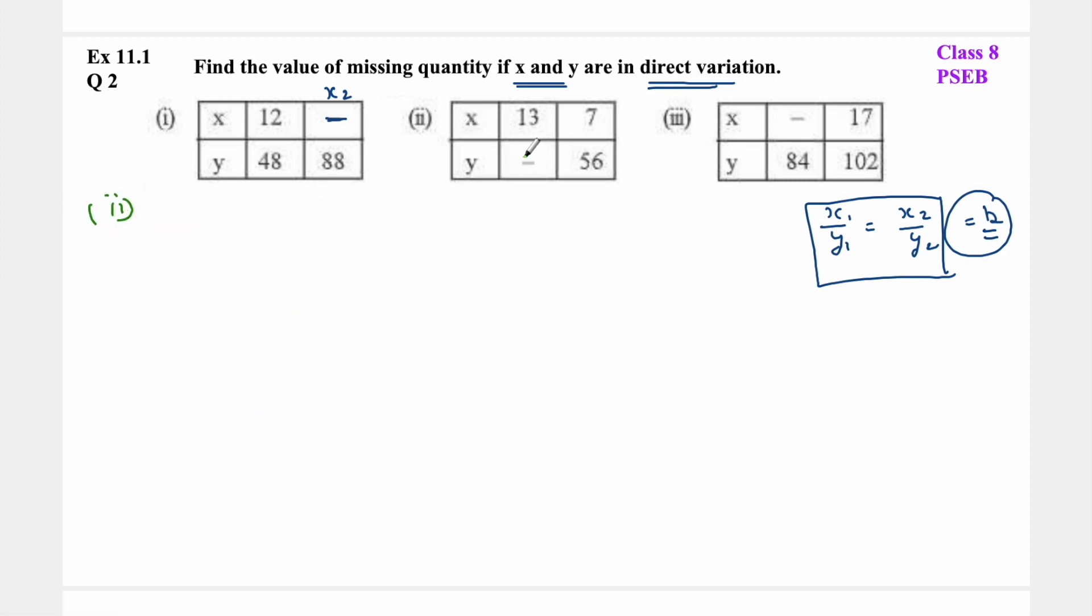For the second part, y1 is missing. We write x1 upon y1 equals x2 upon y2, because they are in direct proportion. So x1 is 13, y1 we need to find, x2 is 7, and y2 is 56. Cross multiply: 13 into 56 equals 7 into y1.